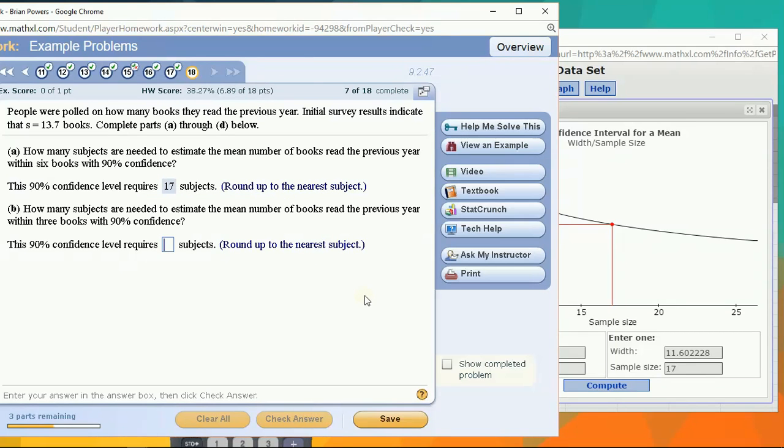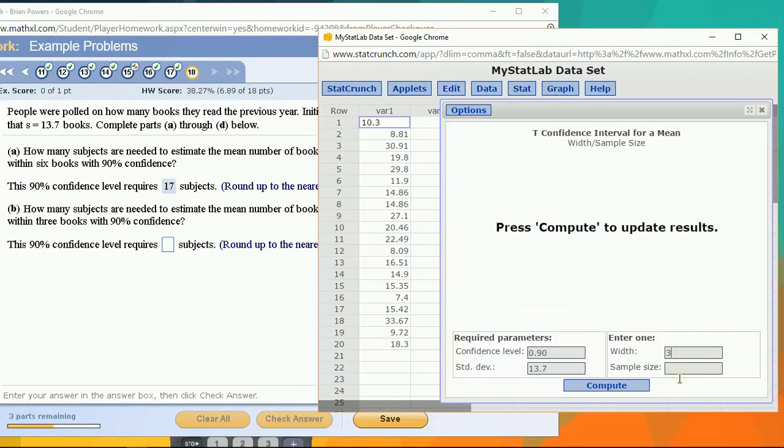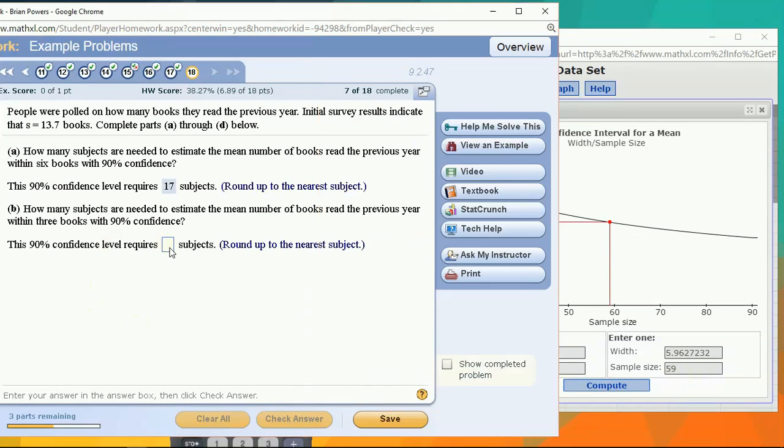How many subjects are needed to estimate it within three books? So let's bring the width down from 12, not to three, remember, to six, because plus or minus three books means in total it's six books wide. That's the one thing that you have to be very careful about here. Okay, 59 people.